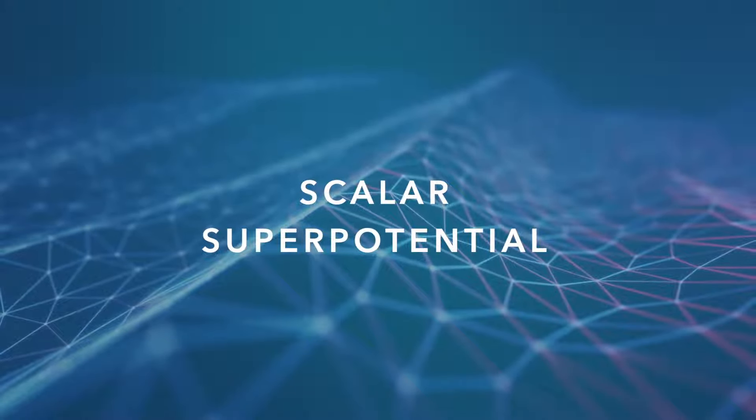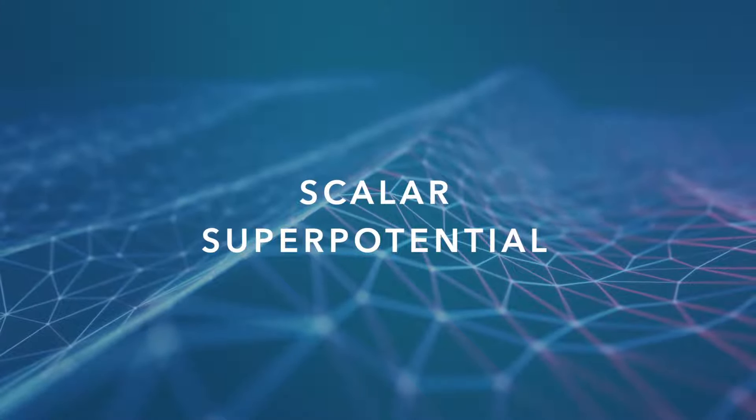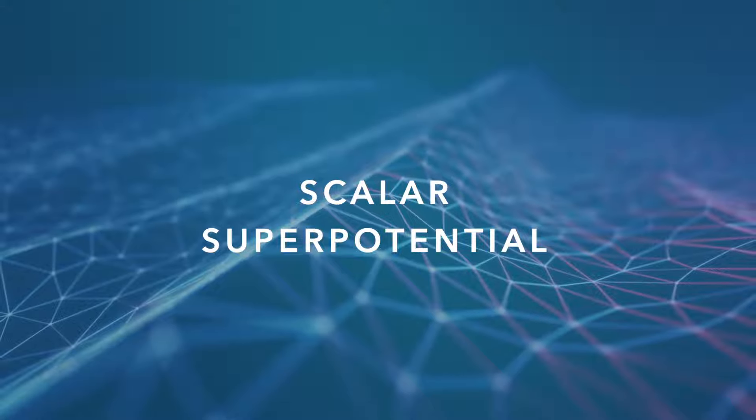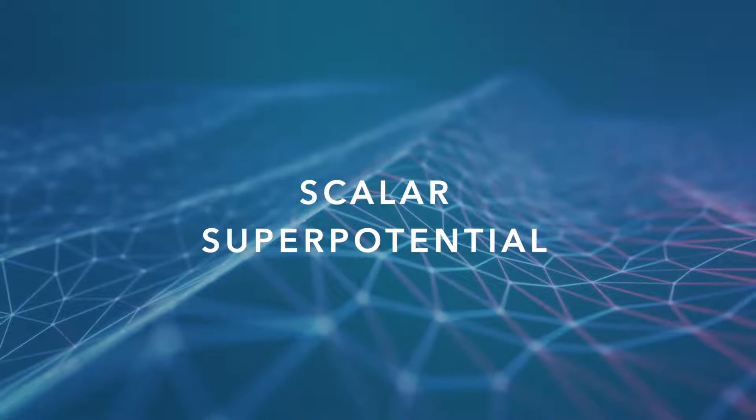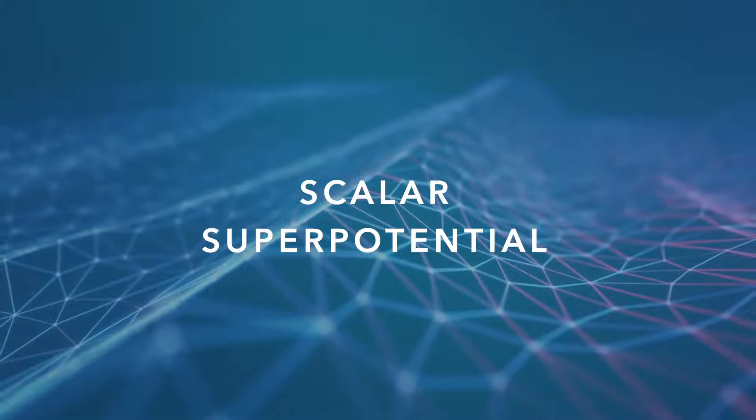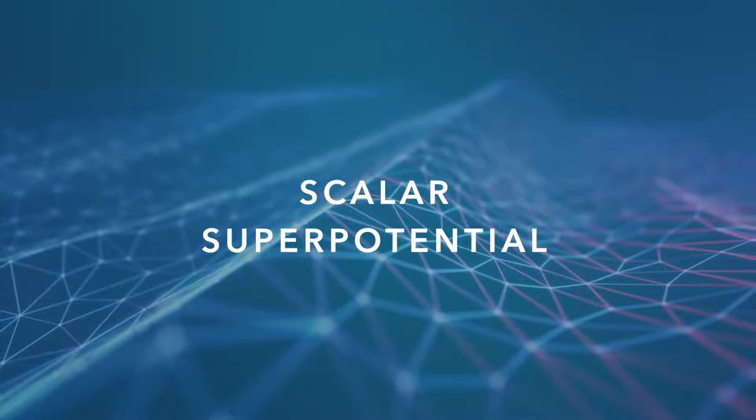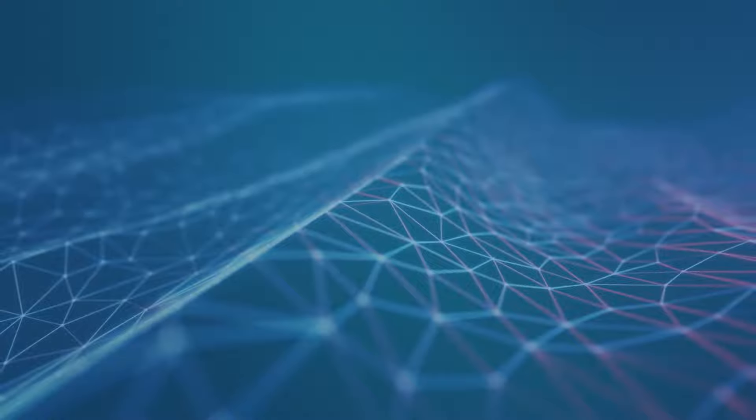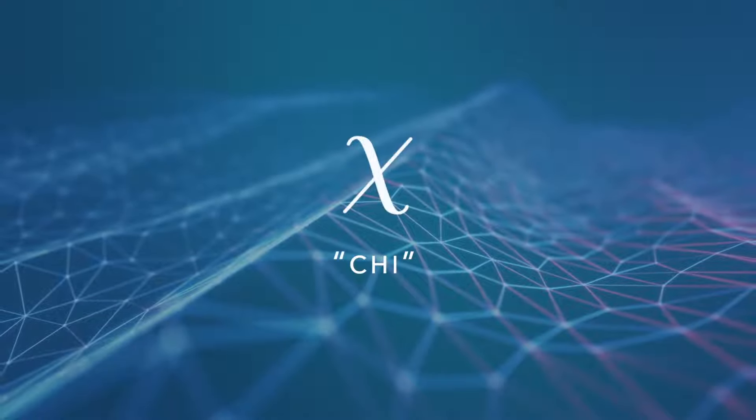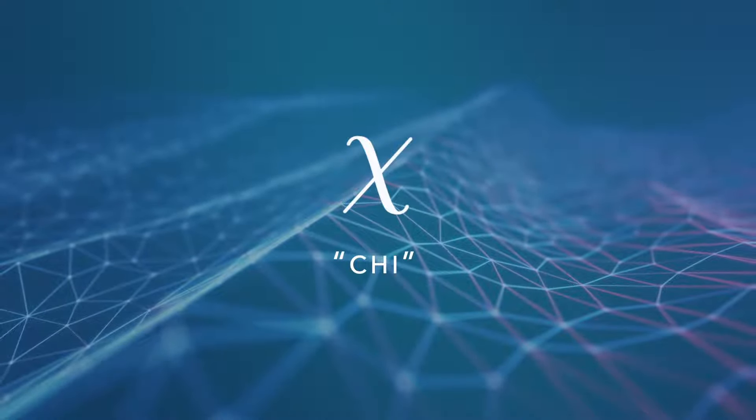Let's call it the scalar superpotential. Scalar because it has one numerical value for each point in that field, a value measured in Webers, and superpotential because it's even more primary than the electric, magnetic, and gravitational potentials. We can denote the superpotential by the Greek symbol chi, which looks like a letter x.